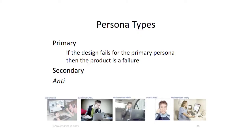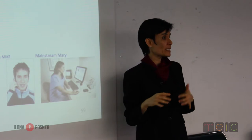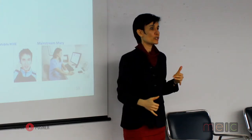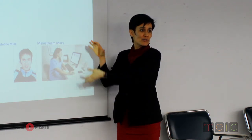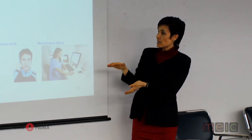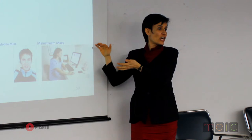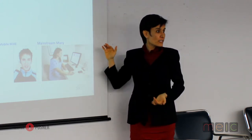Here's a really good example — a real set of personas for a hardware product. We have Extreme Ed, Cautious Carl, Businessman Brad, Mobile Mike, and Mainstream Mary. Some of them are anti-personas. These are people who are going to be setting up and really pushing their machines. Mary's a nurse, she has a teenage son, she works a lot of hours, and she doesn't have a lot of tolerance for technology.